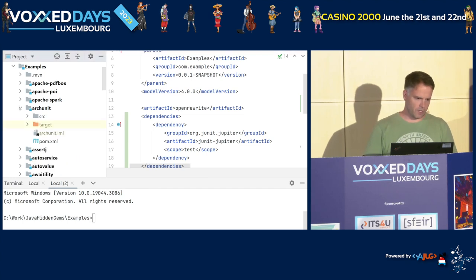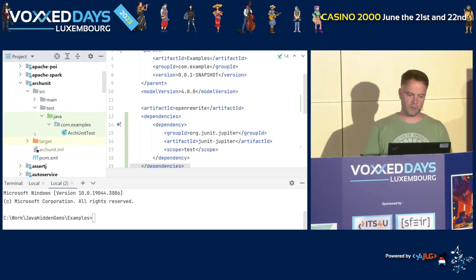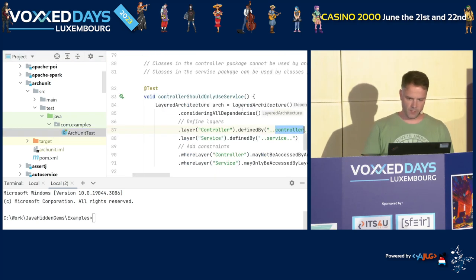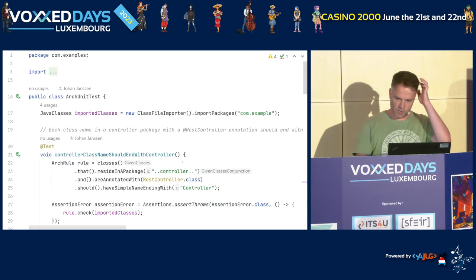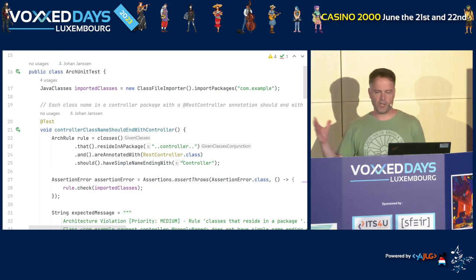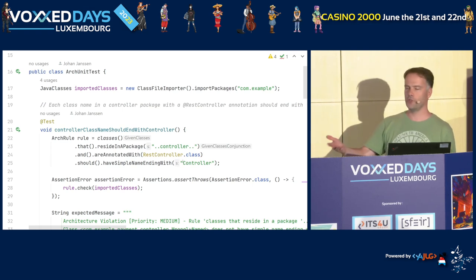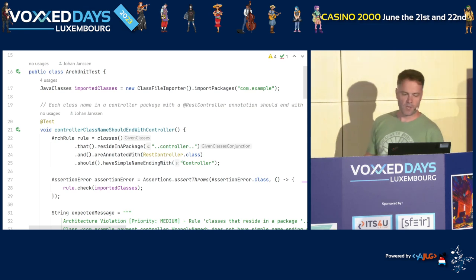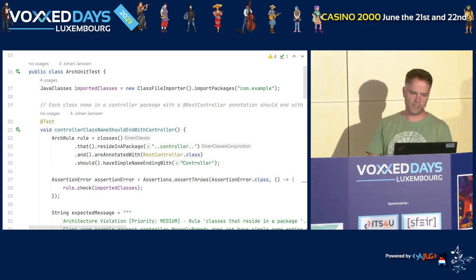If you look at architecture, you can define it somehow, but how do you make sure it's consistently maintained over the course of many years? One of the tools you can use is ArchUnit. With ArchUnit, you can define your architectural rules in a JUnit way of working. Who is using JUnit? Probably most of you. This nicely integrates with JUnit and works in more or less the same way.